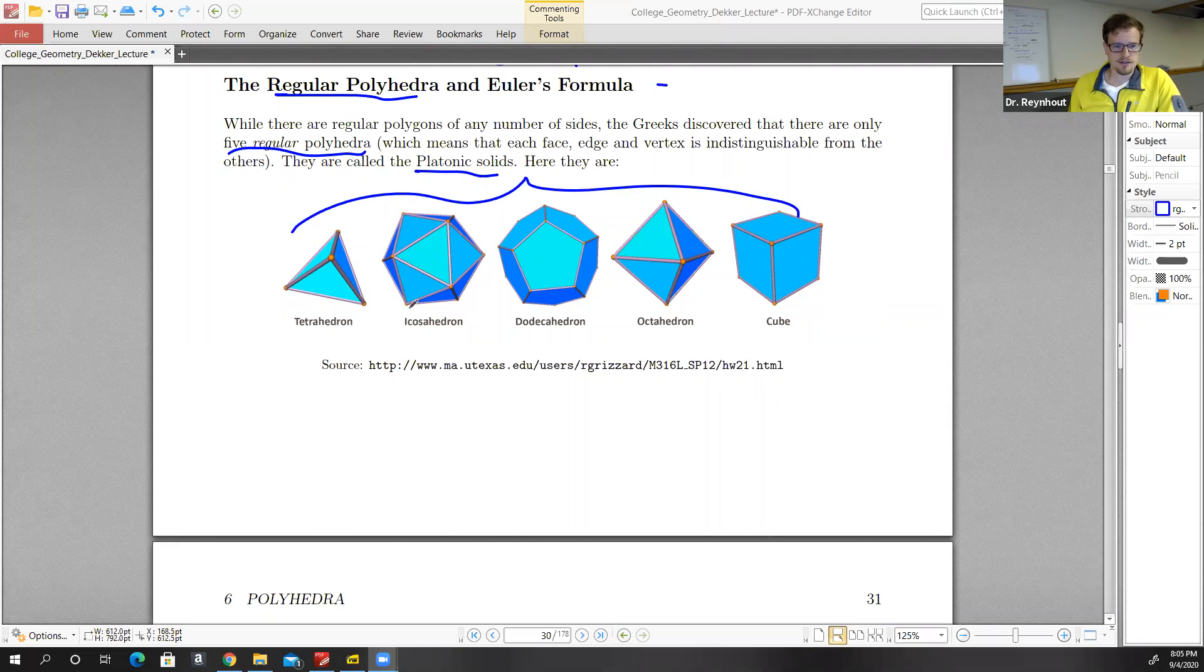Three of them—the tetrahedron, icosahedron, and octahedron—all have faces that are triangles. The dodecahedron has pentagon faces, and the cube has square faces.